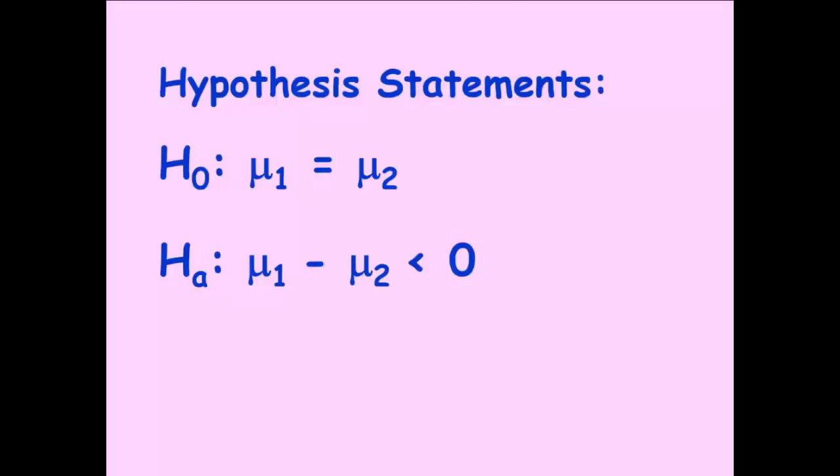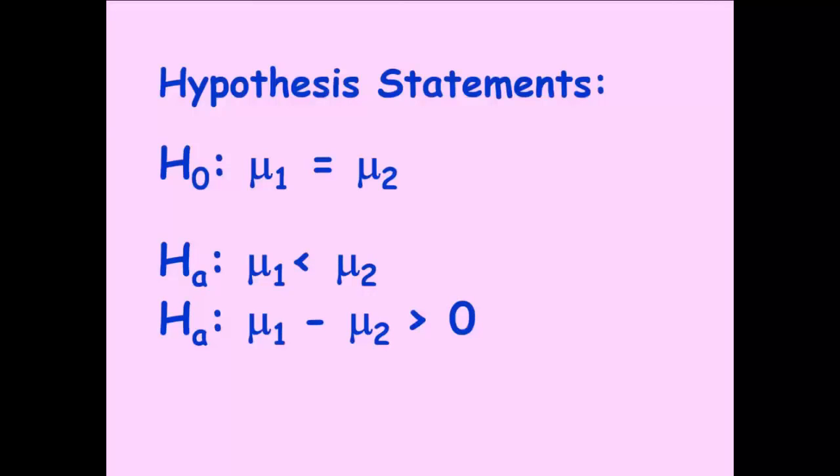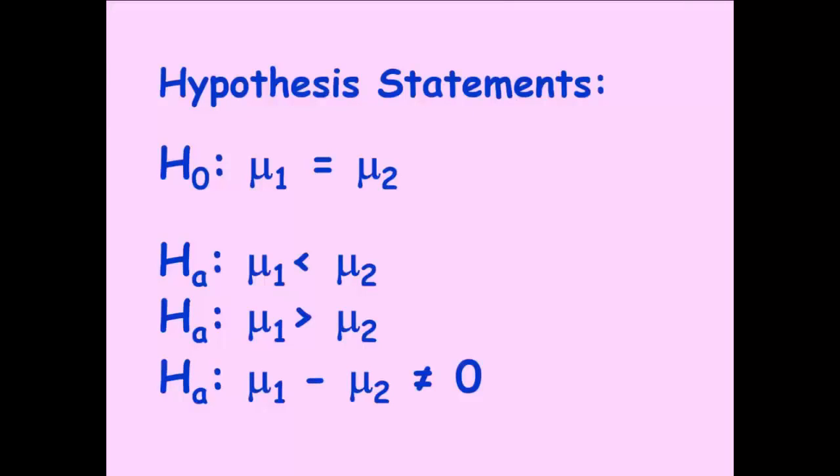So I could say the difference is less than zero, the difference is negative, or I could just say that the mean of the first is less than the mean of the second. I could do the same thing with greater than, so the difference is positive, or the mean of the first is greater than the mean of the second. And then lastly, I could say that on a two-tailed test, that the difference of the means is not equal to zero, or just that mean one is not equal to mean two.